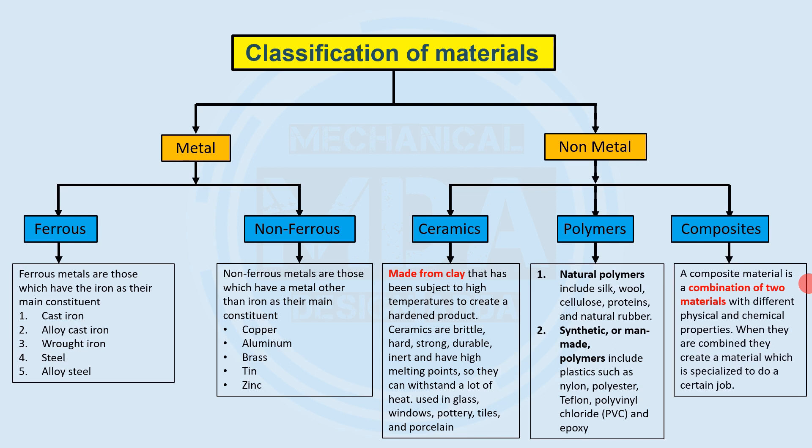Composite materials — as you can see in the name, composite means a combination of two materials. We combine two materials to achieve different physical and chemical properties as per our requirements. When they are combined, they create a material that is specialized to do a certain job, suitable for special applications.